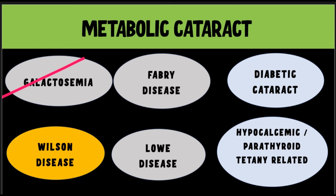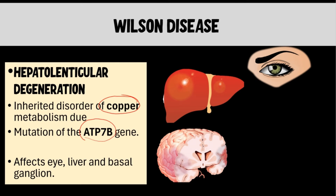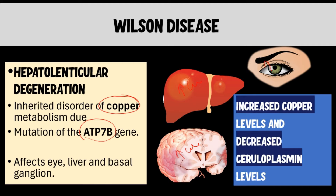Now let us move on to Wilson's disease. Wilson's disease is an inherited disorder of copper metabolism due to mutation in the ATP7B gene. As copper metabolism is affected, there will be increased deposition of copper in the liver, in the basal ganglia, and in the eye — this is called hepatolenticular degeneration. An important diagnostic feature is increased copper levels in the blood, while ceruloplasmin, the protein that binds copper, will be at decreased levels.